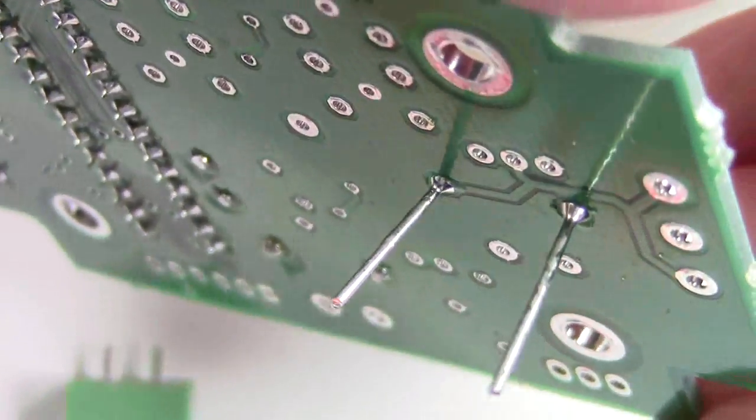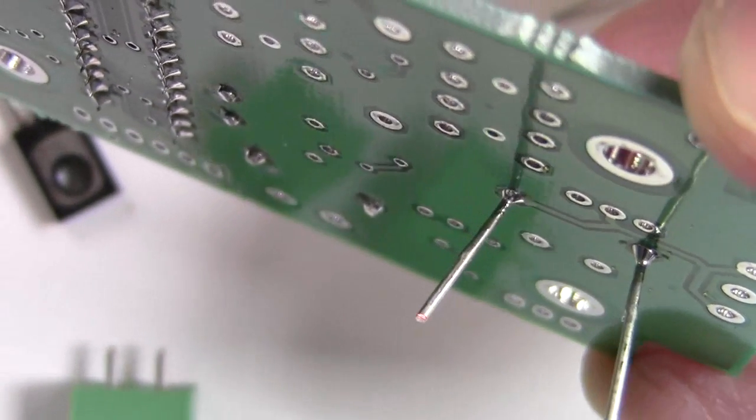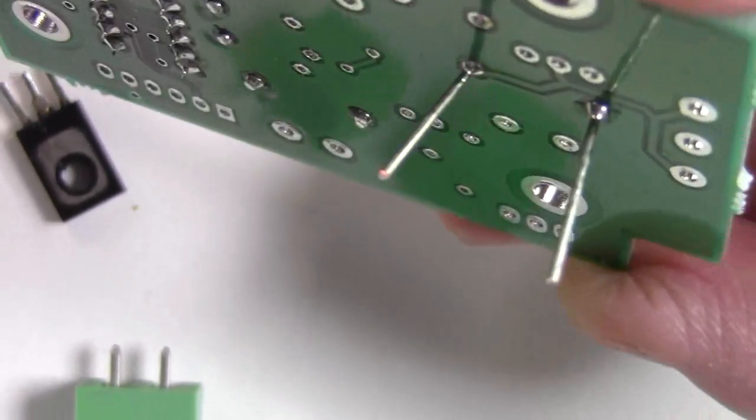Okay, it should look something like so. There, the joint is shiny, dry, everything sort of consistent. Then we clip the leads.